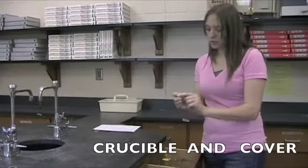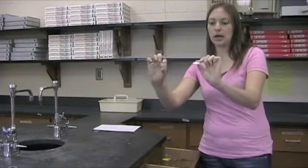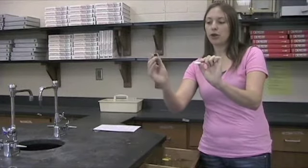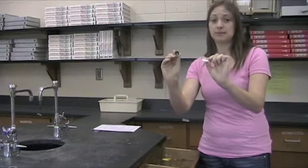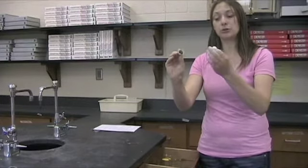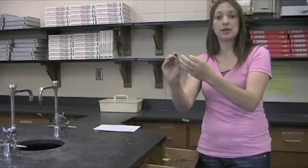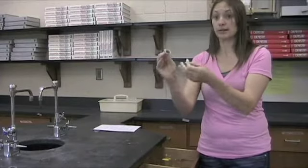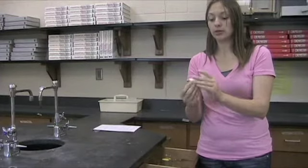Now we have a crucible and it's covered. These are little bitty guys. What they are used for is to heat. You put them over a Bunsen burner and you can put your substance in there and you can get this very, very hot, because it is ceramic. The lid goes on top there.